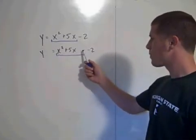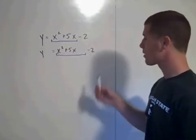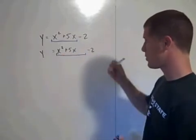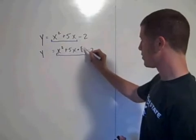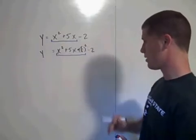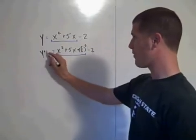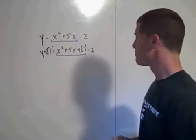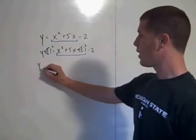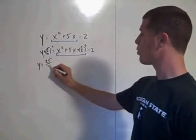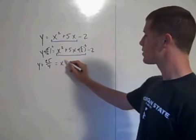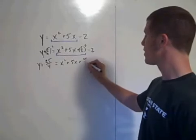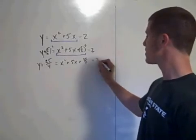You need to add (b/2) squared to complete the square with those two terms — so add (5/2) squared, which is 25/4. You must also add 25/4 to the other side to keep it an equation. So you have y plus 25/4 equals x squared plus 5x plus 25/4 minus 2.